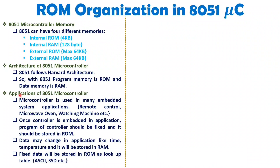When we talk about applications, 8051 is used with many embedded applications such as remote controls, microwave ovens, and washing machine timing control. When you use 8051 in an application, whatever program you store inside memory should be fixed — you cannot change the program, so it is stored inside ROM. But data may change with respect to the application, so it is temporarily stored inside RAM.